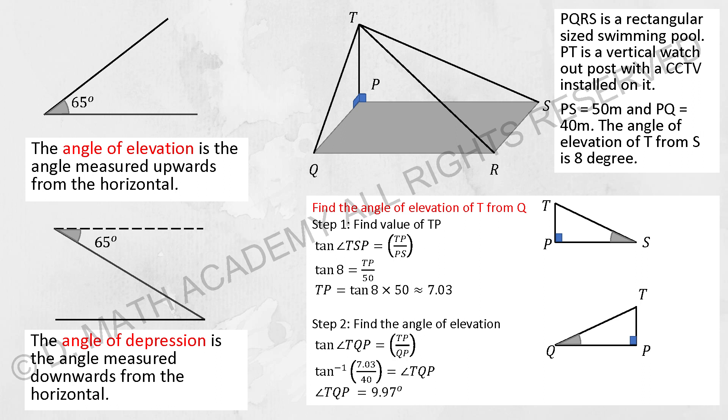PS is 50m, PQ is 40m, and then the angle of elevation of T from S is 8 degrees. So find the angle of elevation of T from Q.